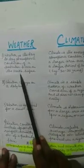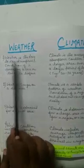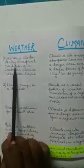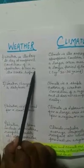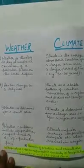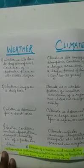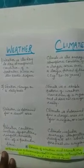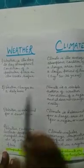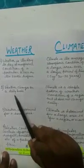First, regarding weather: weather is the day-to-day atmospheric condition of a particular place on the Earth's surface. At any place, one day may be bright and sunny while it may rain on the next day. Weather changes on a daily basis.